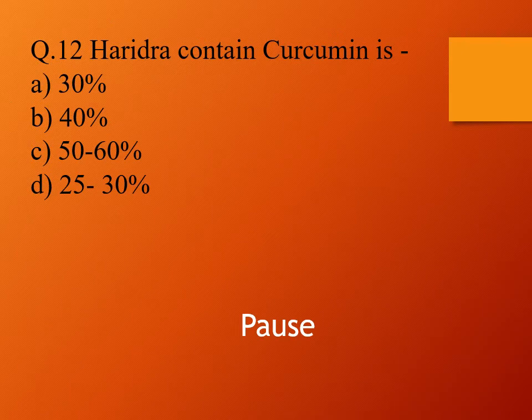Question 12. Haridra contains curcumin: option A, 30%; option B, 40%; option C, 50% to 60%; and option D, 25% to 30%. The right answer is option C, 50% to 60%. So haridra contains curcumin at 50% to 60%.